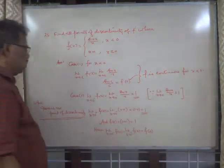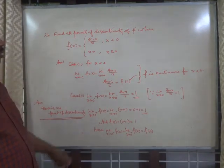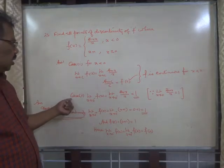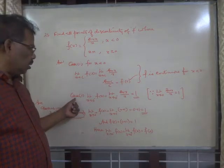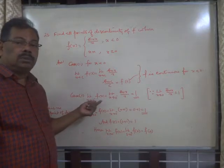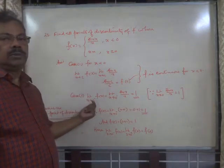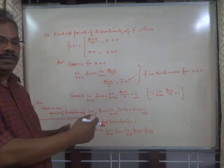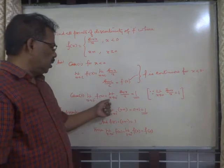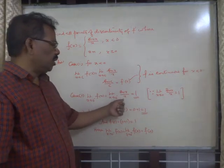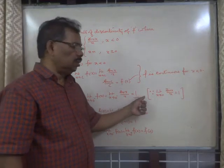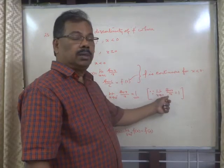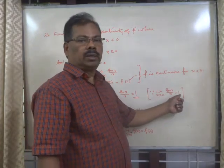Then we come to the particular point 0. Case 2: the left-hand limit — limit x tends to 0 minus — in the neighborhood of 0 just less than 0, that is limit x tends to 0 minus of sin(x)/x, which equals 1. This is a standard identity: limit x tends to 0 of sin(x)/x equals 1.